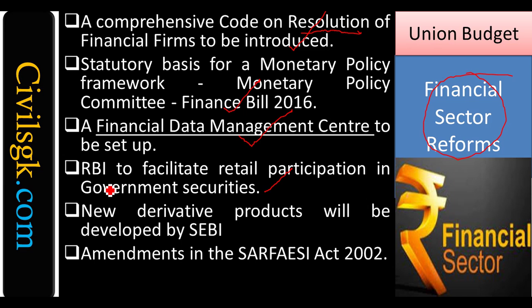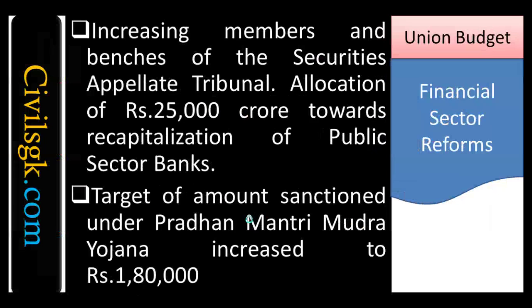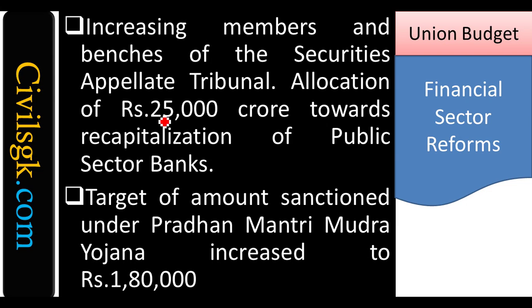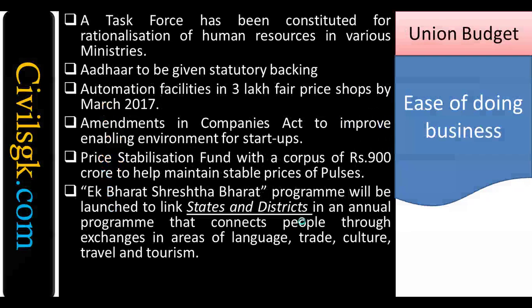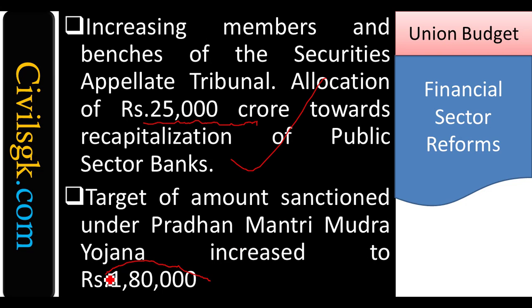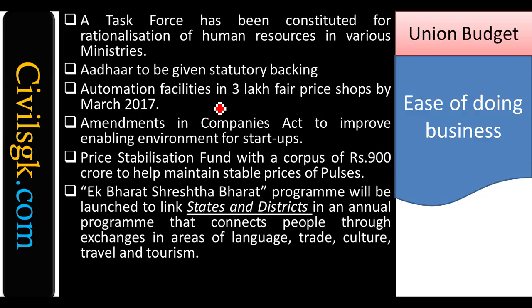New derivative products will be launched by SEBI and almost 12 amendments are going to come in the SARFAESI Act 2002. The number of benches in the Securities Appellate Tribunal (SAT) will be increased and ₹25,000 crores allocated for public sector banks. The Pradhan Mantri Mudra Yojana scheme amount was increased to ₹1.80 lakh crores. For ease of doing business, Aadhaar is going to get statutory backing — a law.